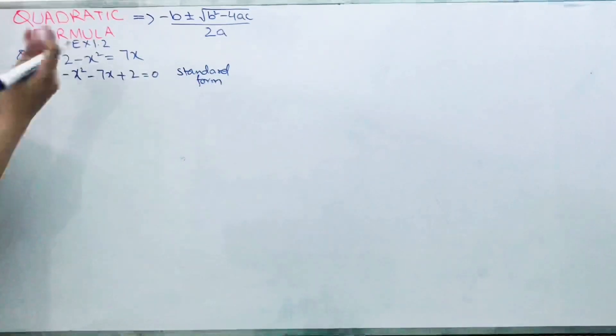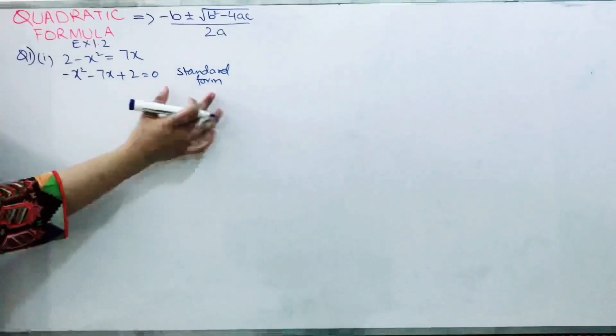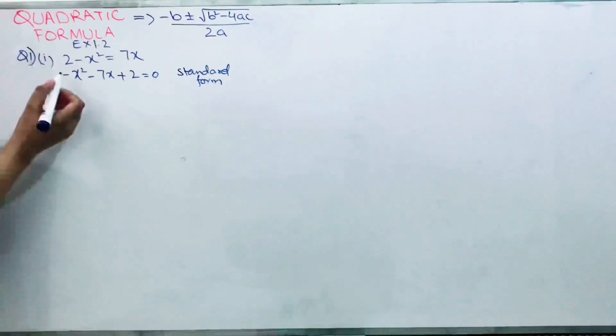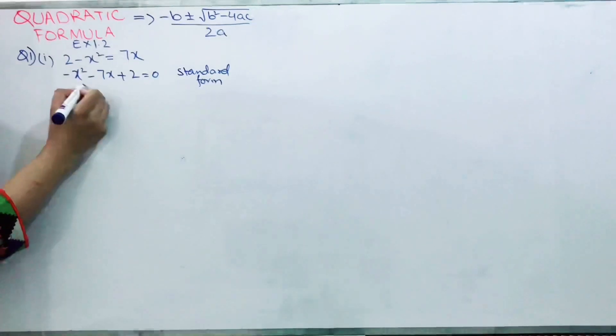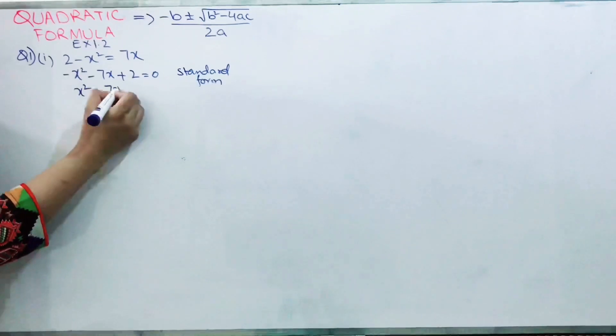Why? Because on your right hand side you have equals 0, so this is your standard form. In the next step, I can take the minus sign common. When minus is common, it becomes x square plus 7x minus 2 equals 0.